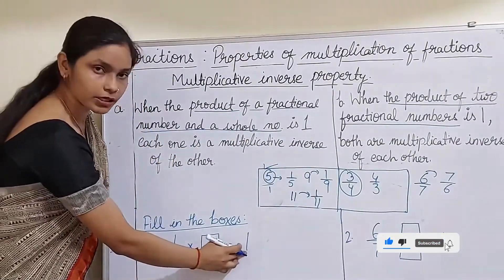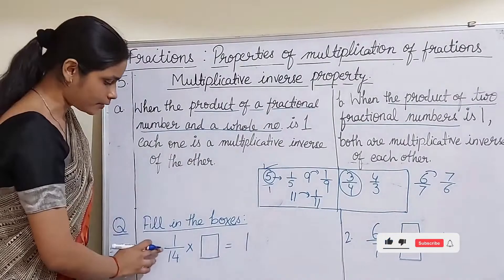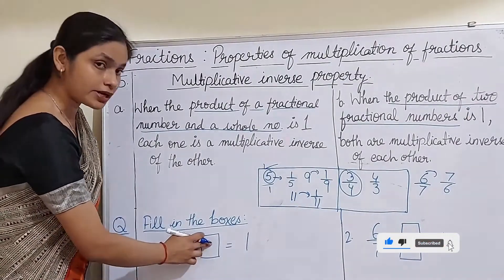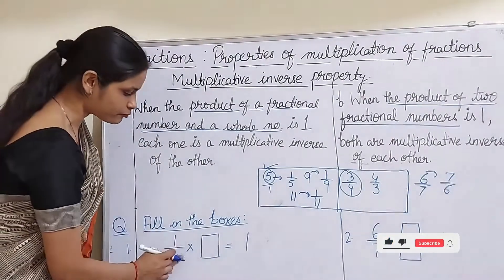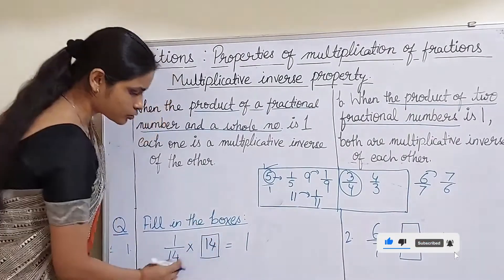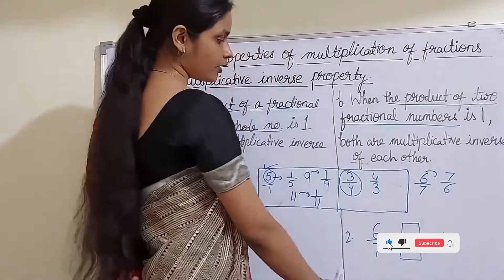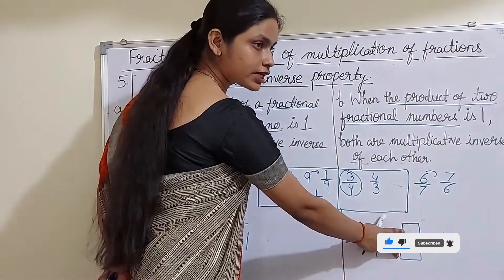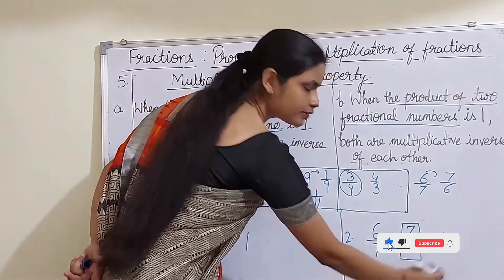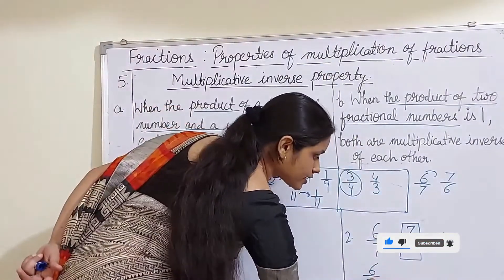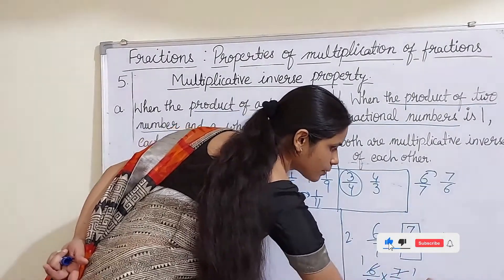Let us apply the multiplicative inverse property. When will a product equal 1? For 1/40 multiplied by what number gives 1? The multiplicative inverse of 1/40 is 40/1, which is simply 40. For 6/7 multiplied by what number gives 1? The multiplicative inverse of 6/7 is 7/6. Multiplying 6/7 × 7/6: numerator is 6 × 7 = 42 and denominator is 7 × 6 = 42, so the product is 1.